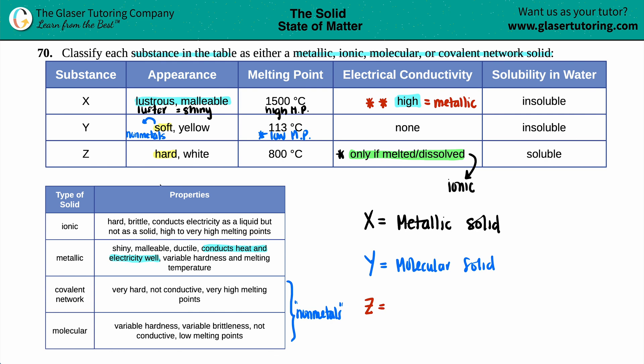And it says right here. It says conducts electricity as a liquid, but not as a solid. So that's the very, very special property for only ionic solids. So Z is an ionic solid.